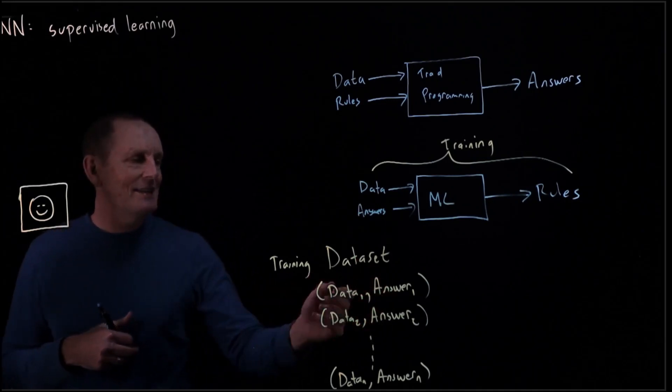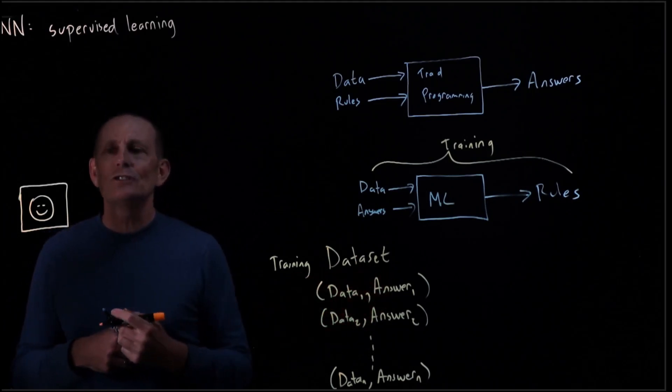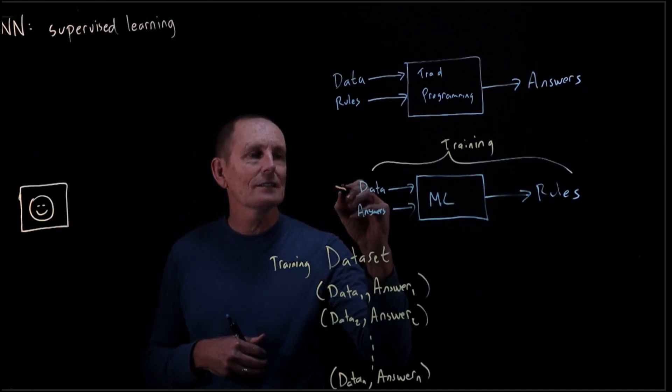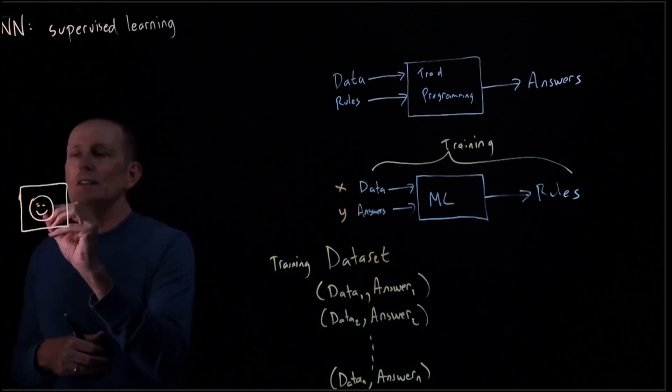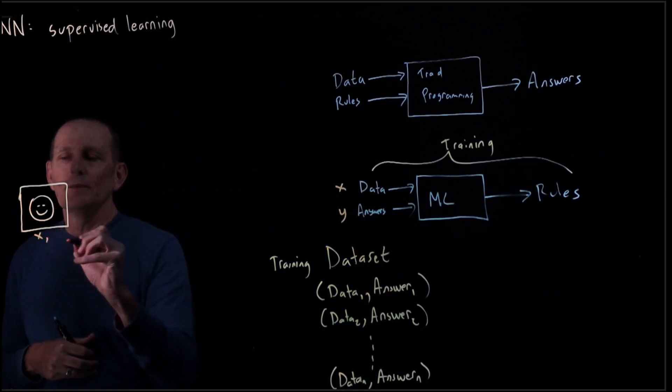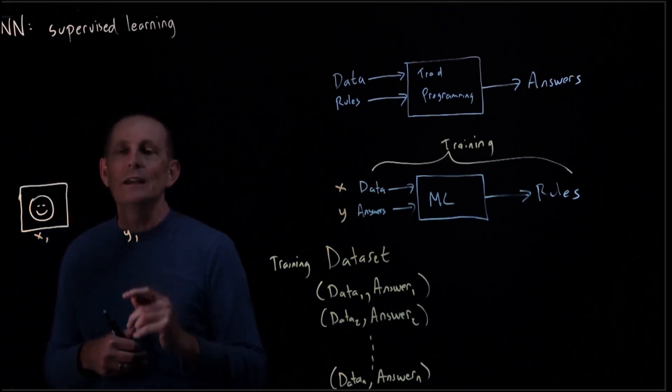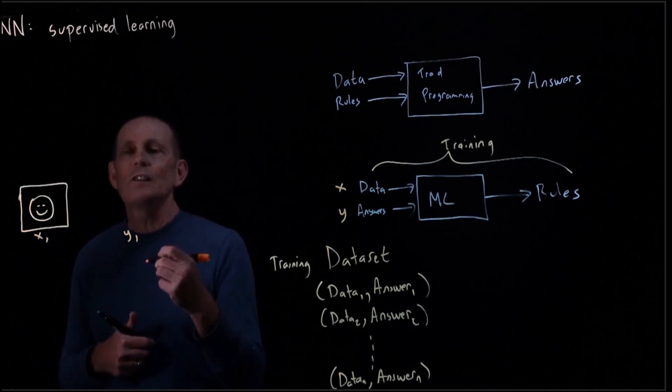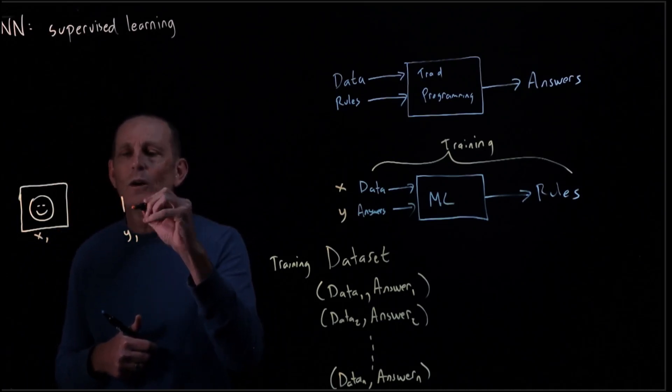Instead of using data one and answer one, let's just use x and y. So we'll normally first these is x and these is y. So this could be x sub one, and y sub one is an indication whether this is a happy face or a sad face. So let's just say happy faces are a one.